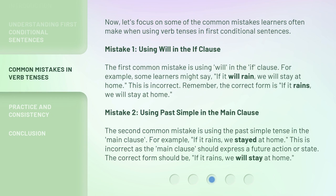Now, let's focus on some of the common mistakes learners often make when using verb tenses in first conditional sentences. Mistake 1: using will in the if clause.